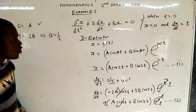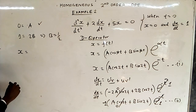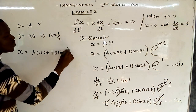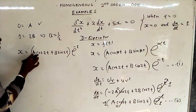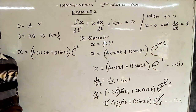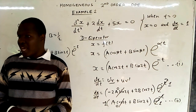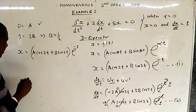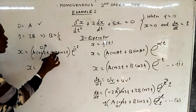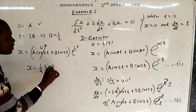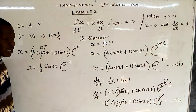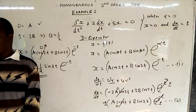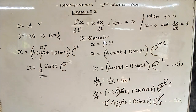In the general solution, x equals (A cos 2t plus B sin 2t) times exponential negative t. Substituting A equals 0 and B equals one-half: all the A terms go to 0, and we remain with x equals one-half sin 2t times exponential negative t. This is the particular solution of the second order homogeneous ordinary differential equation.